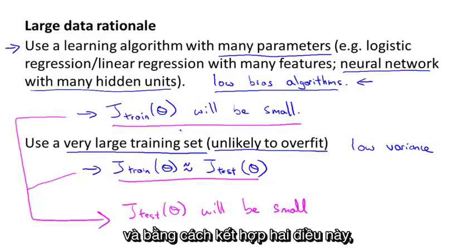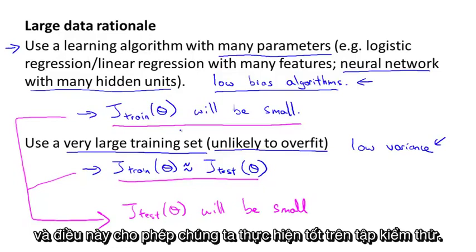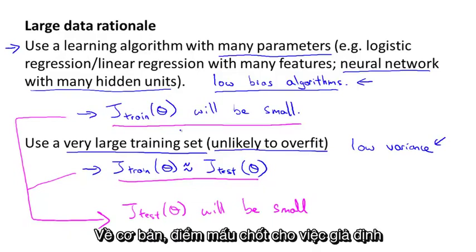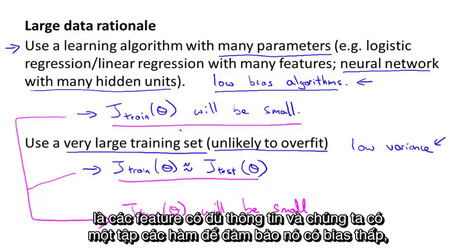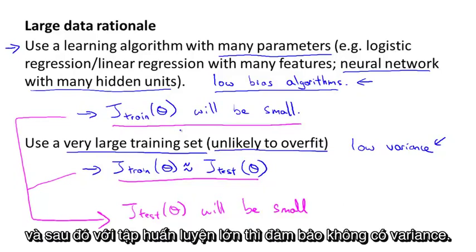And so it's by putting these two together that we end up with a low bias and a low variance learning algorithm, and this allows us to do well on the test set. And fundamentally, it is a key ingredient of assuming that the features have enough information and we have a rich class of functions, that's what guarantees low bias. And then it's having a massive training set that guarantees low variance.